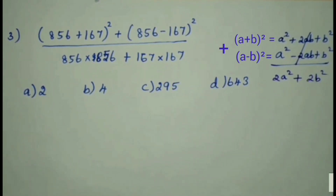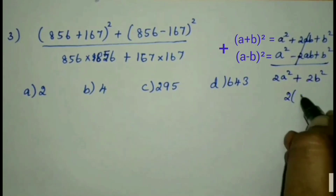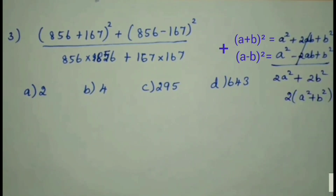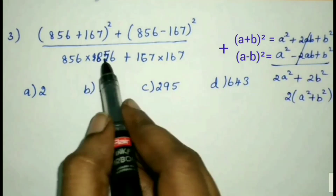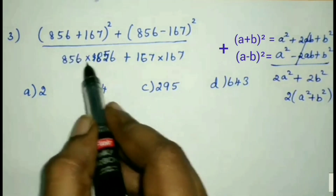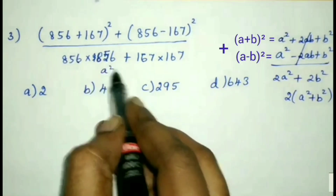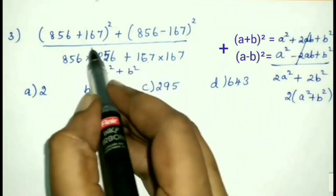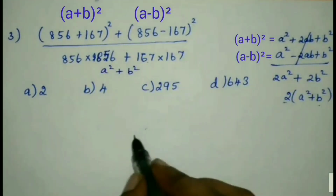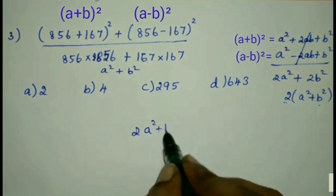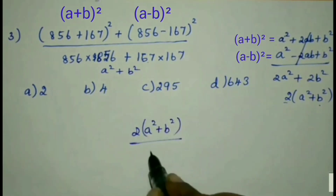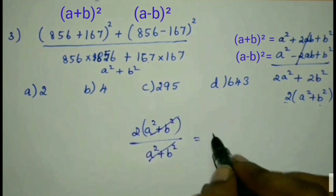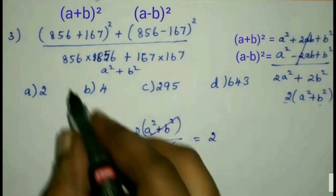Taking 2 as common gives 2(a² + b²). Now looking at the denominator: it is a² + b², where a = 856 and b = 167. The numerator is 2(a² + b²) and the denominator is (a² + b²), so both cancel, leaving the answer as 2.